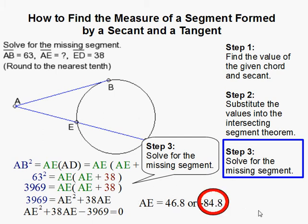But you can't have a negative answer because this is a real-world problem with a distance, and a distance cannot be negative. So 46.8 is the proper answer, rounded to the nearest tenth as the problem requested. That completes our problem.